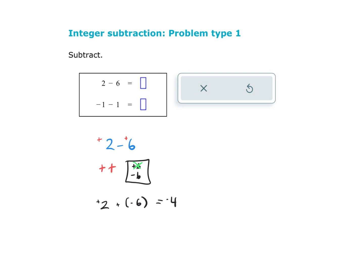And again, subtracting is the same thing as adding the opposite. One last example: negative 1 minus 1. I have 1 negative; I'm trying to take away 1 positive because this is a positive. The only problem is I don't have 1 positive to take away, so I'm going to give myself 1 positive and 1 negative. Now I'm going to take away that 1 positive. What I have left is a negative and another negative, which is 2 negatives. What we really just did is negative 1 plus another negative 1, which of course is negative 2.